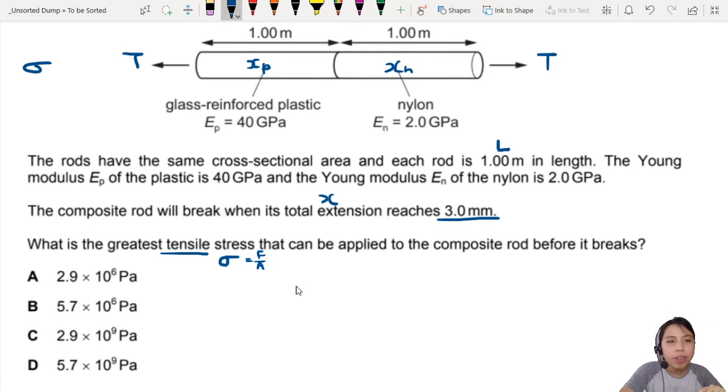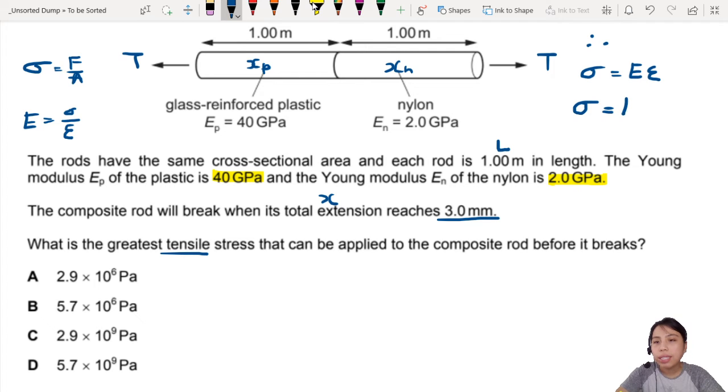How do we start? Tensile stress - stress is force per unit area, that's what we know, but how do you involve things like Young's modulus into the picture? You need to know Young's modulus is stress over strain. Therefore, I can say stress is Young's modulus times strain. Maybe I don't have force or per unit area, so let's try this: stress equals Young's modulus times what is strain - extension over original length. Let's use that to help us get started.